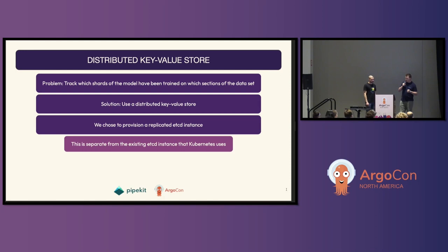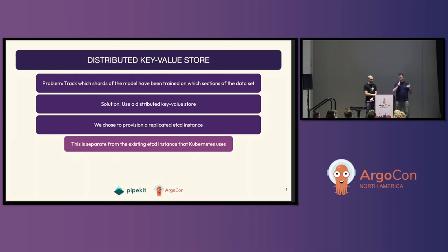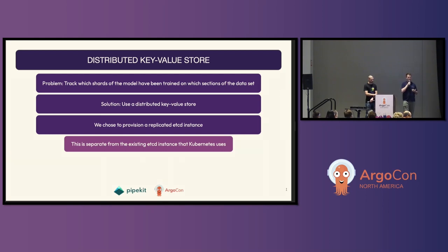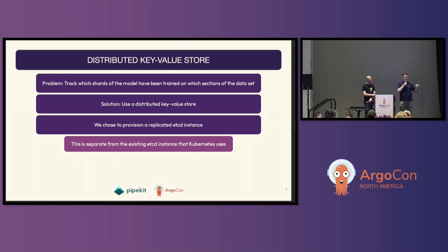Touching more on the distributed key-value store: the problem is we want to track which shards of the model have been trained on which sections of the dataset, and ensure each GPU can share metadata with the others. We chose etcd because we're familiar with it, there is existing PyTorch documentation on how to use it, and spinning it up on Kubernetes was relatively easy. We'll refer to this as the training etcd instance for clarity.